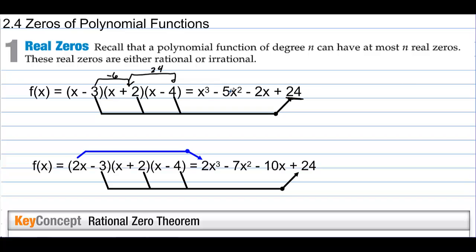So if we're given this polynomial, if we want the potential zeros, we just have to find the factors of 24, which would be 1, 2, 3, 4 — 6 would be a possibility, and notice that 6 doesn't work, but at least we would know the possibilities.